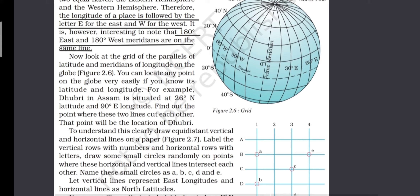Here we look at a new term called grid. A network of latitude and longitude that cross each other to form a series of squares is called a grid. In figure 2.6 you can see latitudes and longitudes intersecting each other and forming square shapes, which help us find out the location of a place. We can locate any place with the help of this grid.